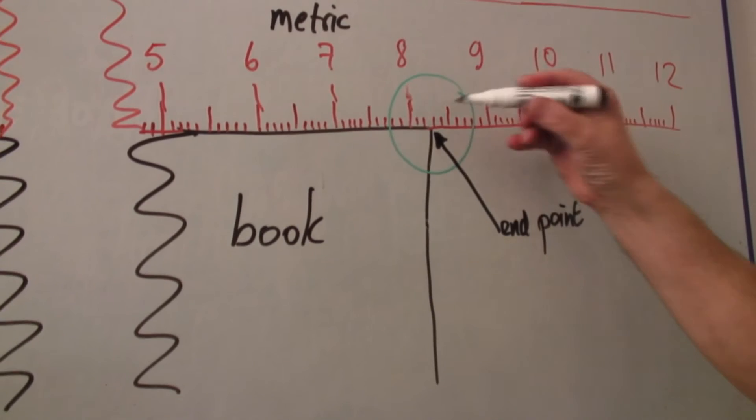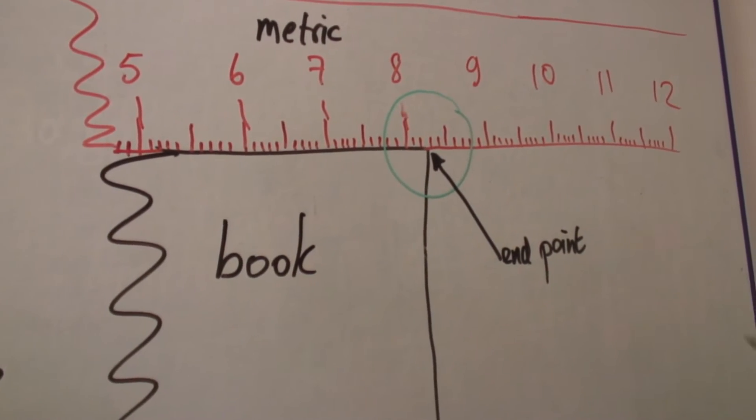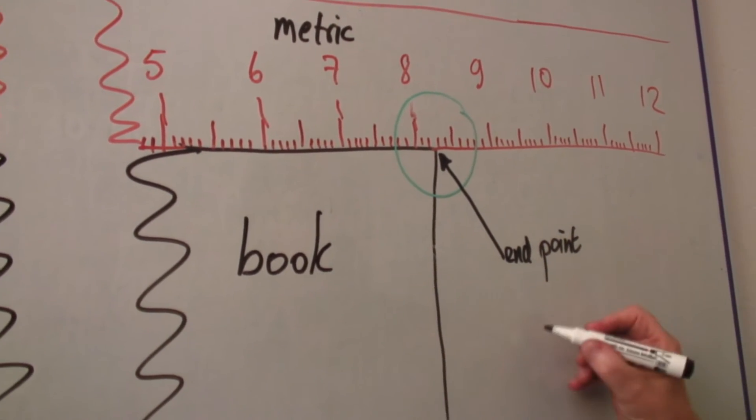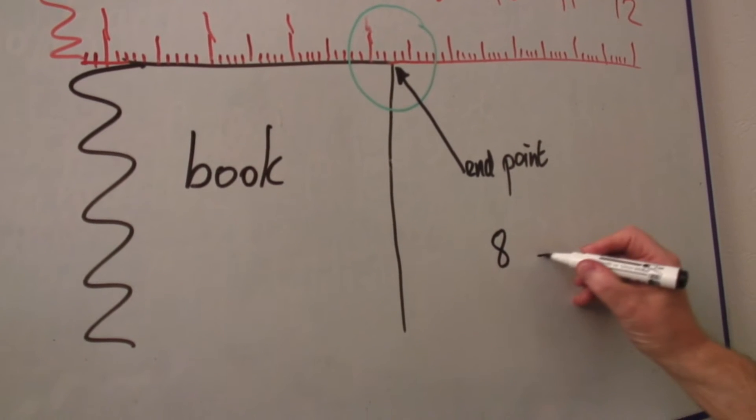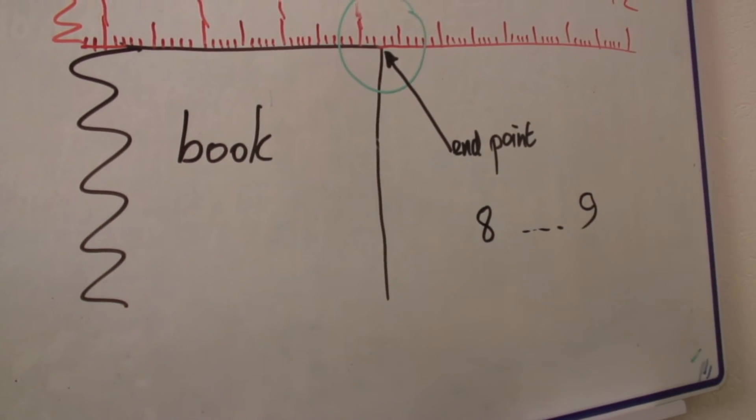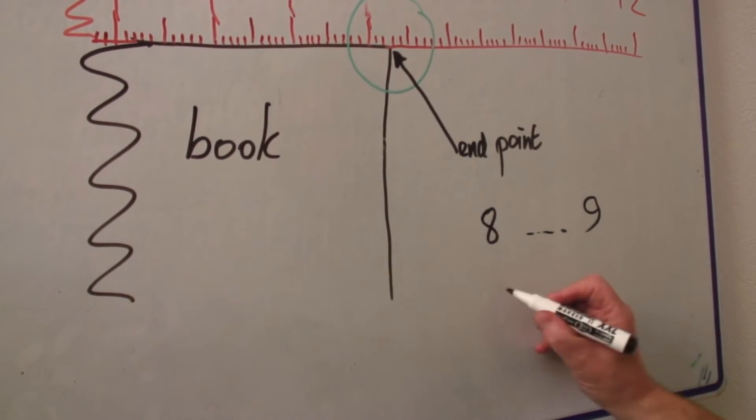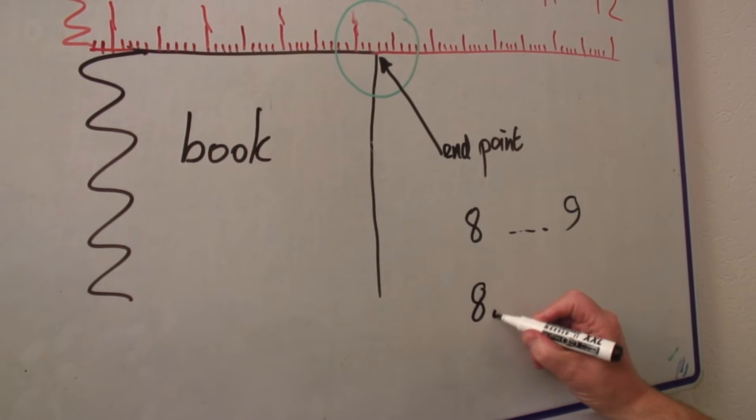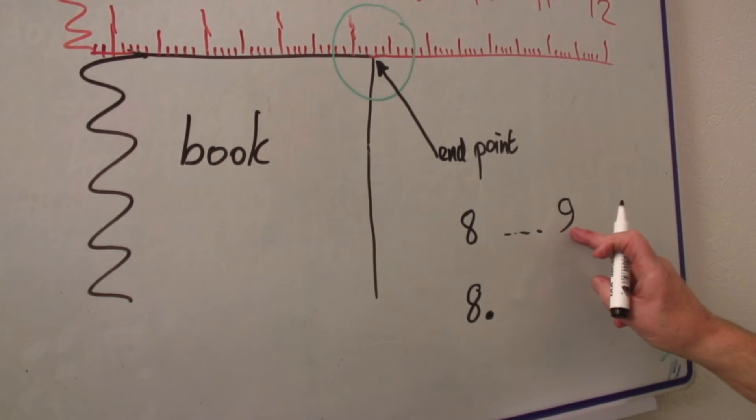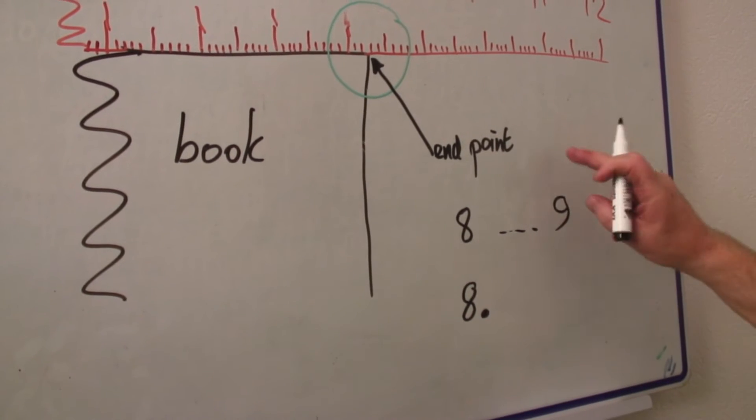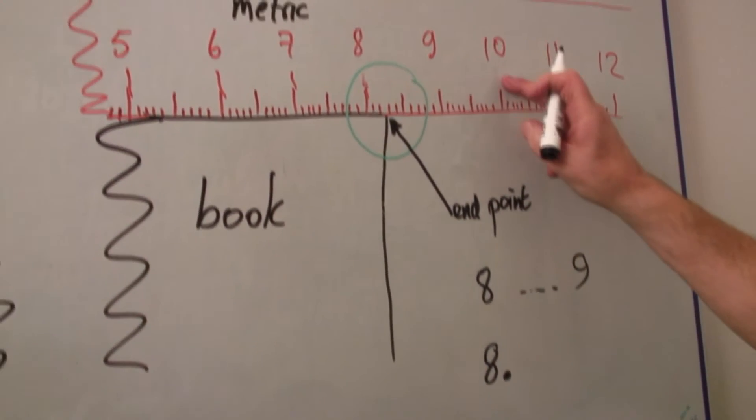All right? So it's between eight and nine. You know that the length is between eight and nine, which means that the answer is going to be eight point something, because if it was nine point something, it would be more than nine. It would be at this side.